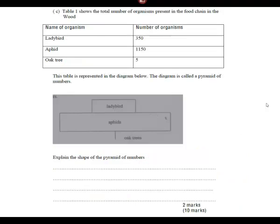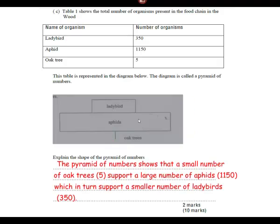The table shows the total number of organisms in the food chain: ladybirds 350, aphids 1150, oat trees 5. Here we've got a pyramid of numbers — we've seen this sort of shape before, but it's a bit of a strange shape because of what's at the bottom. Explain the shape: the pyramid shows a small number of oak trees supporting a large number of aphids, which in turn support a smaller number of ladybirds. Give yourself another two marks if you got that.